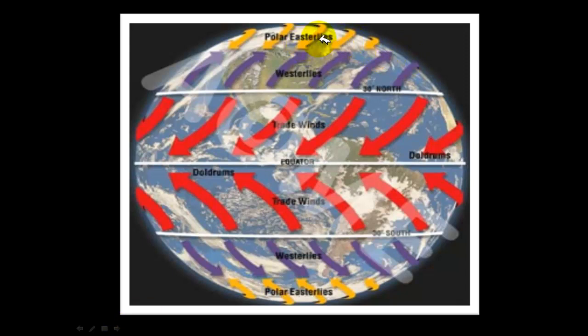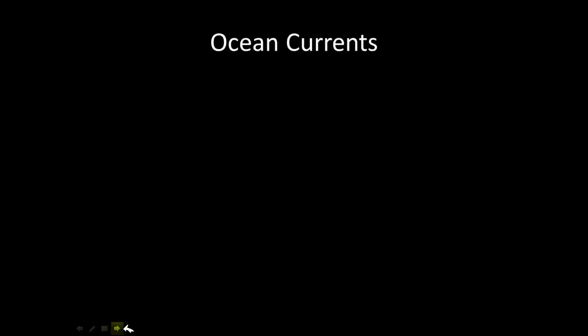This graph shows the polar easterlies, the westerlies, and the trade winds together — just another visual to help you commit the wind patterns to memory.